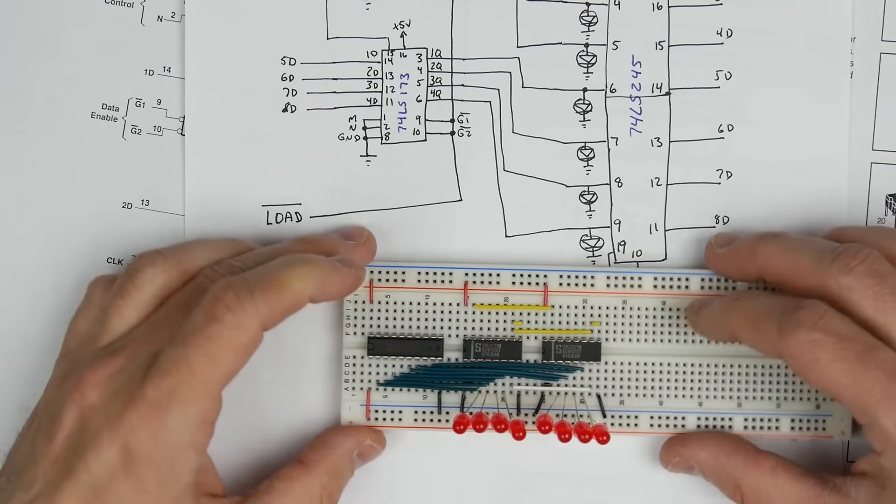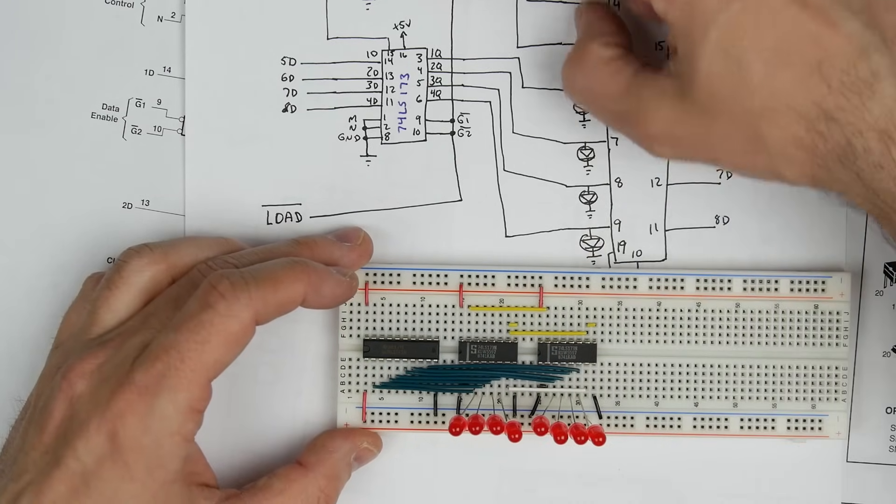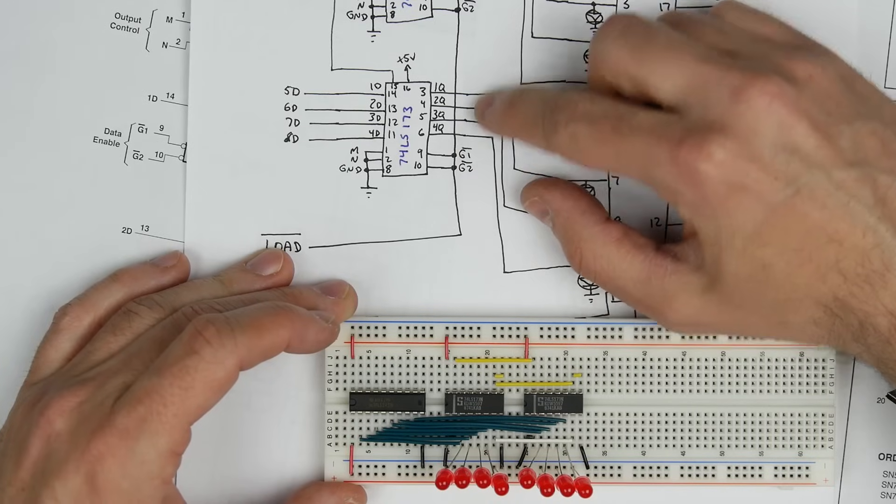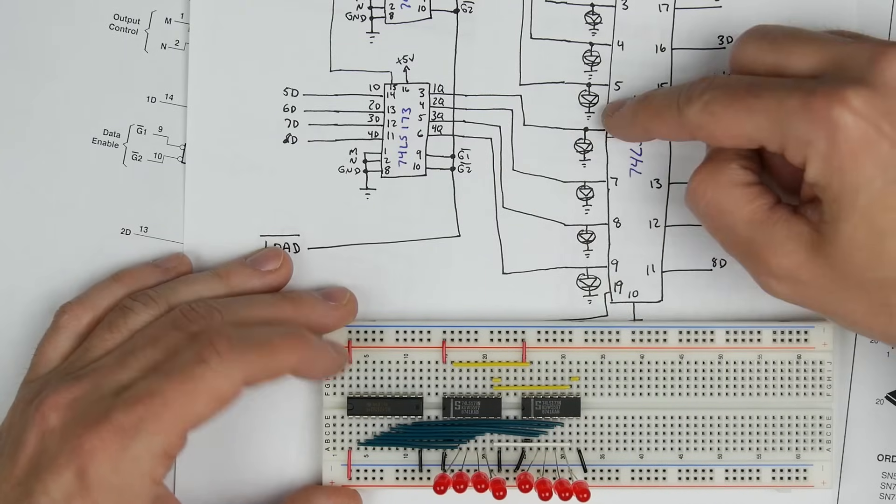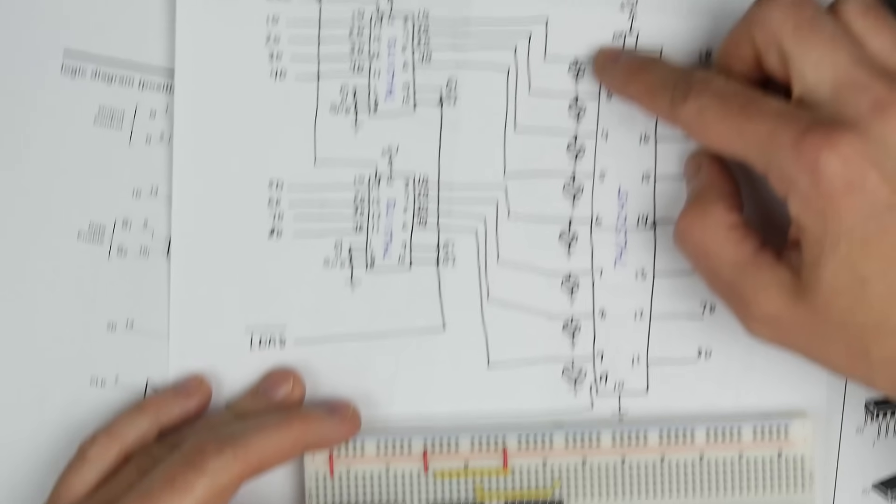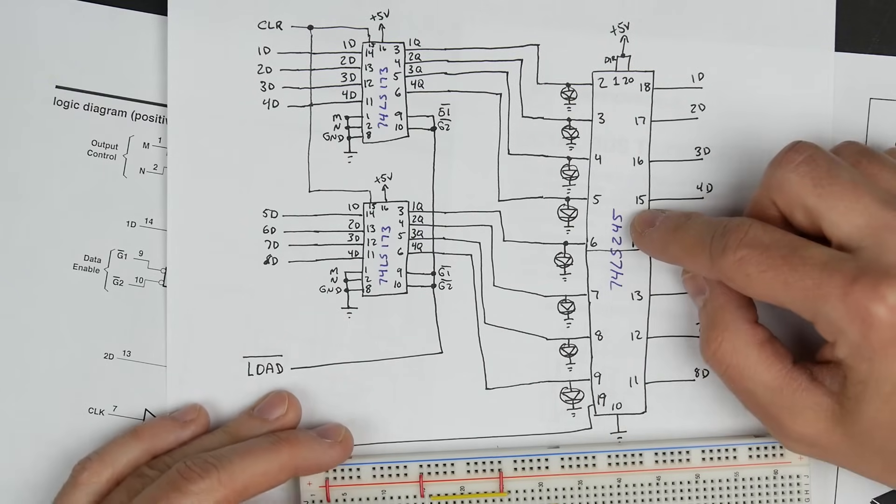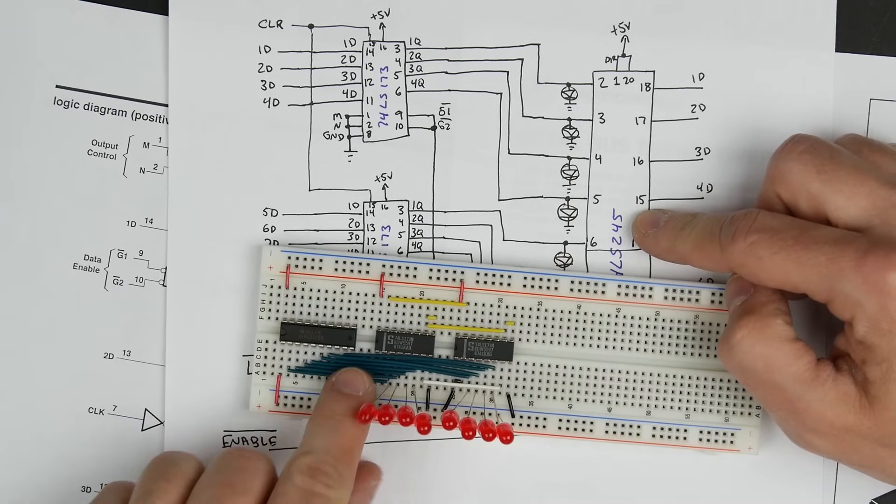We've got this hooked up now so that all of our outputs here from the 74LS173 register chips are hooked to the eight inputs across our 74LS245, which is over here.